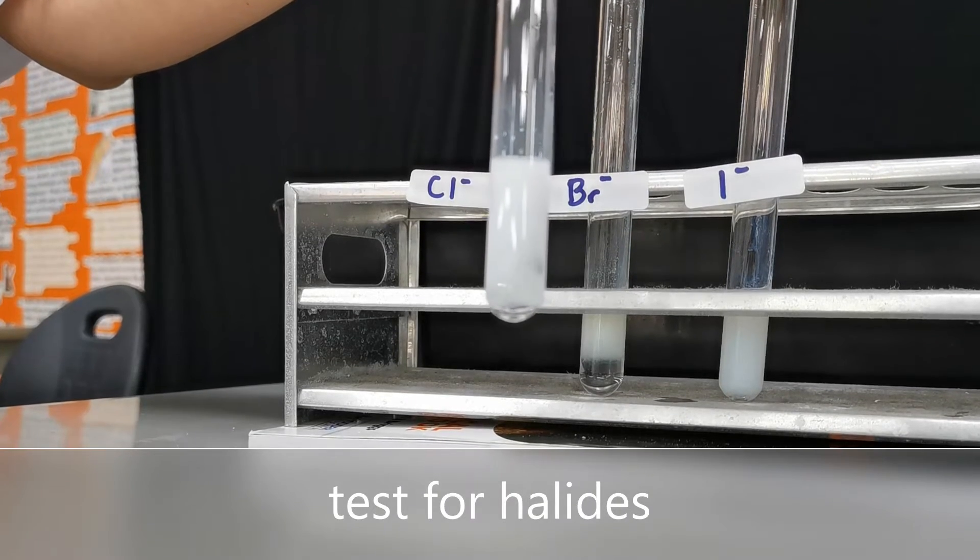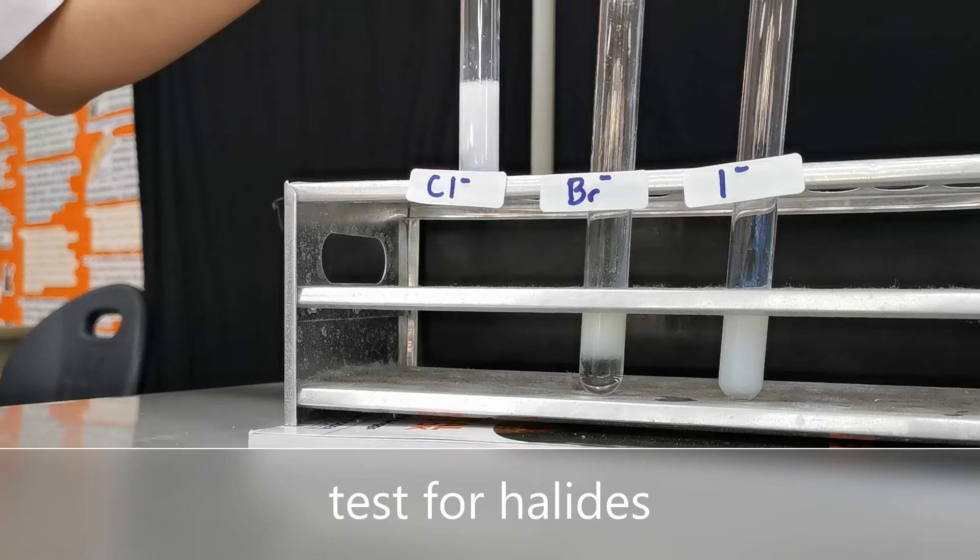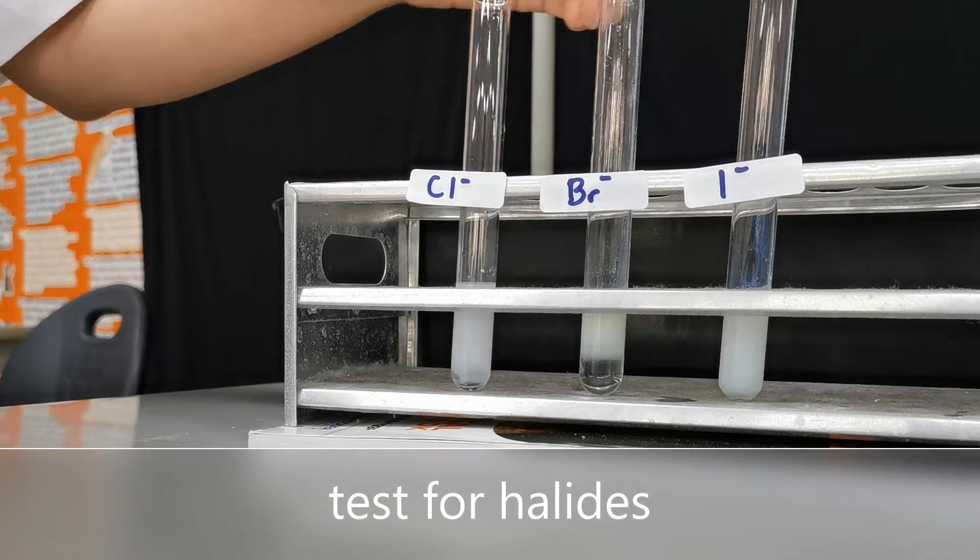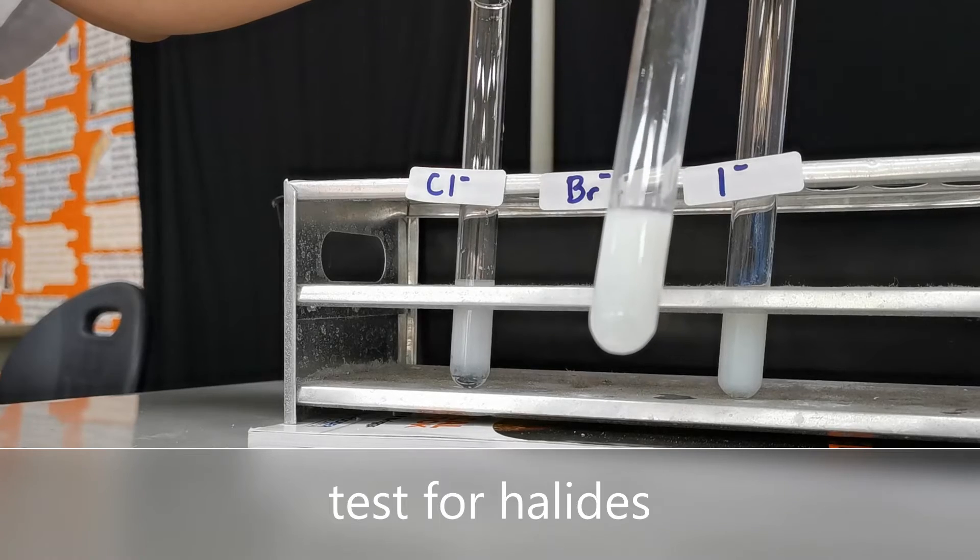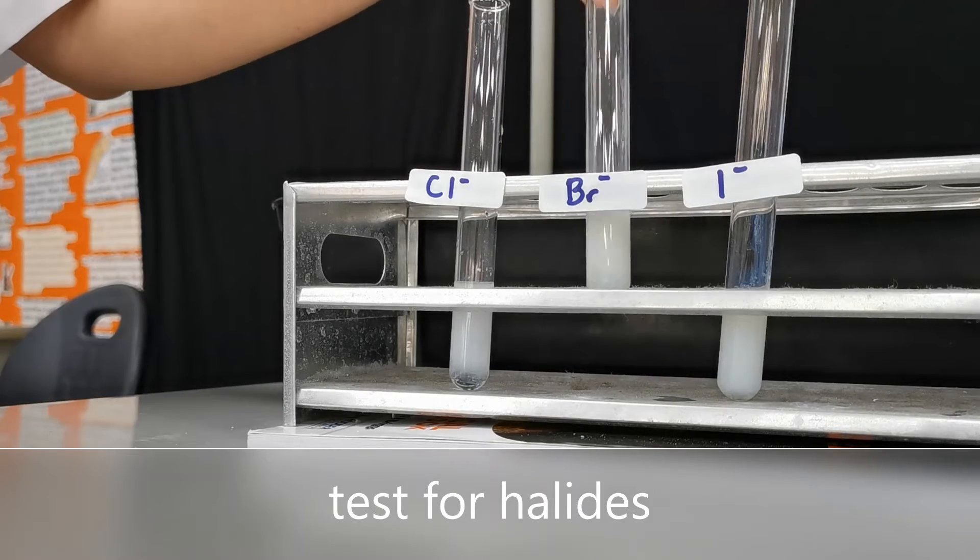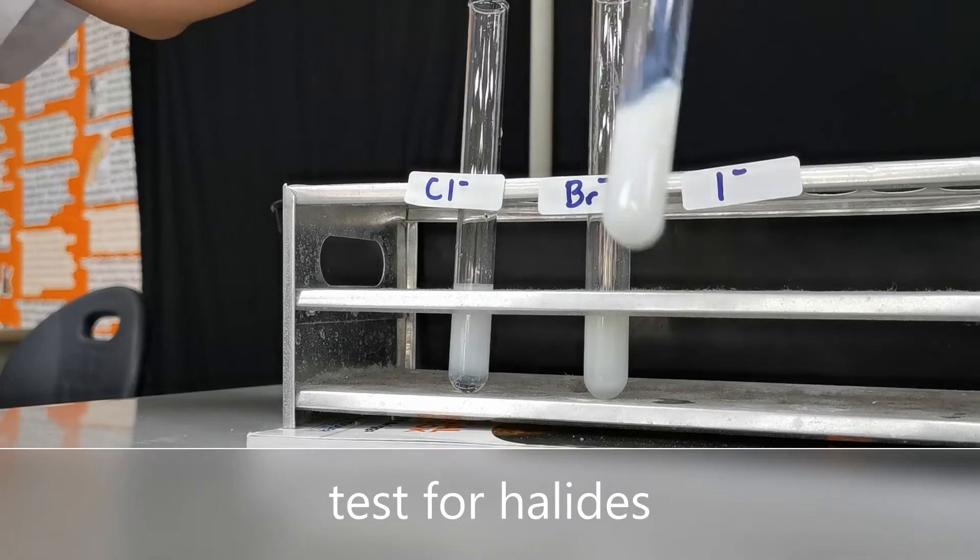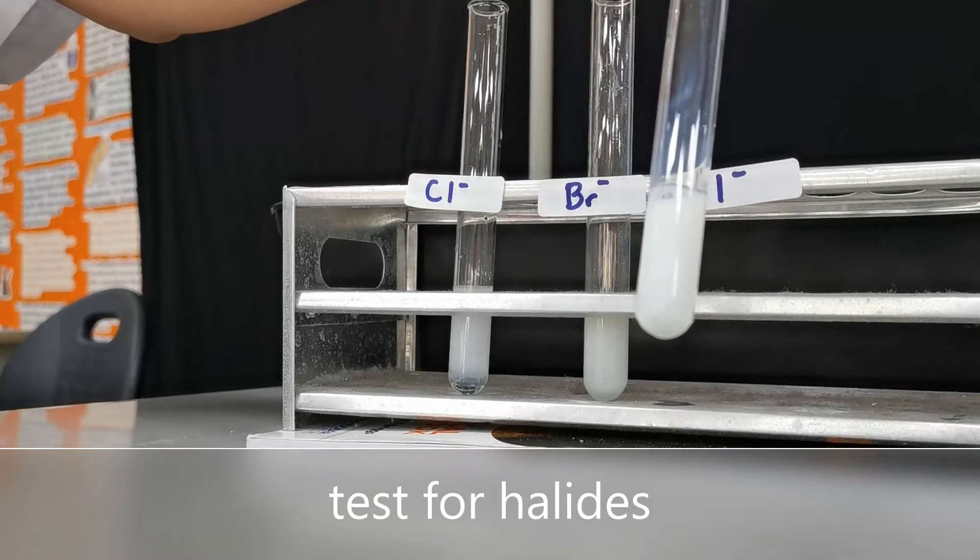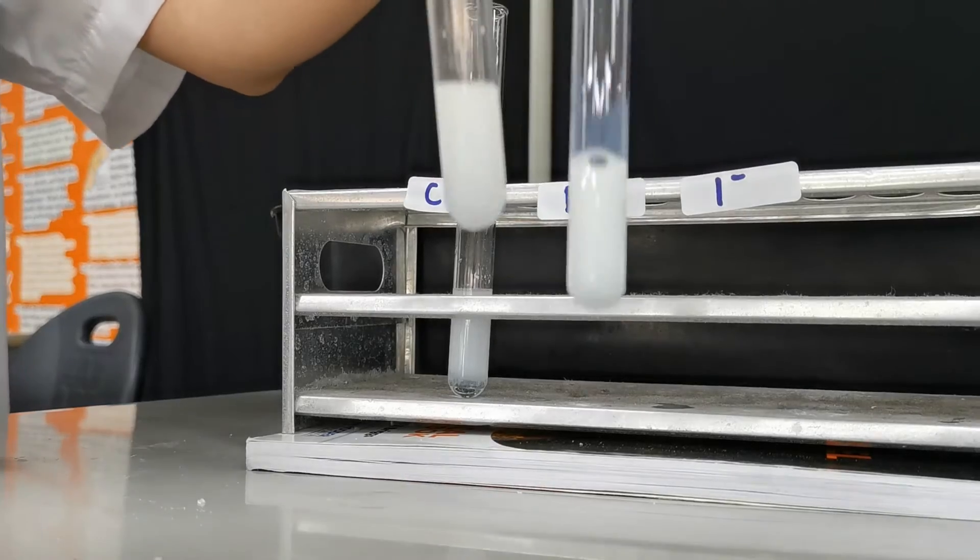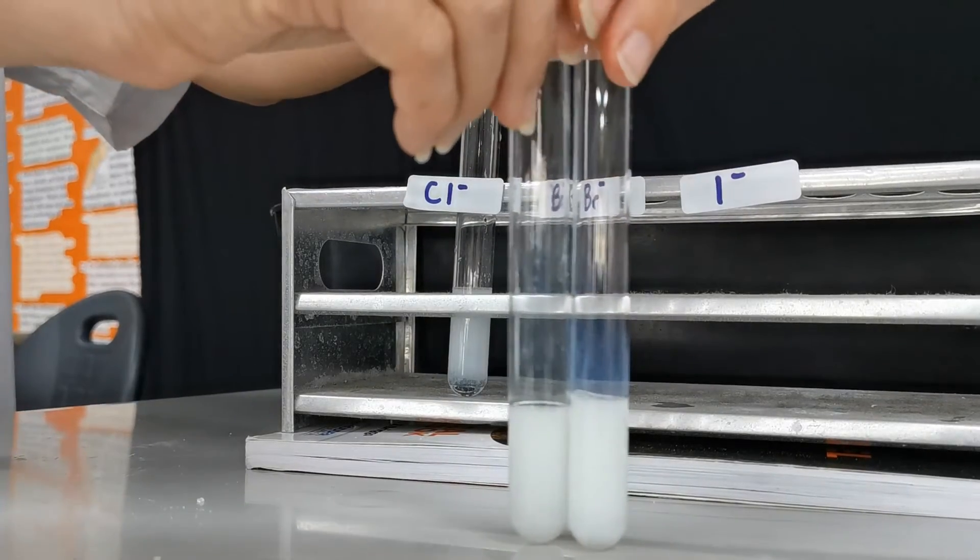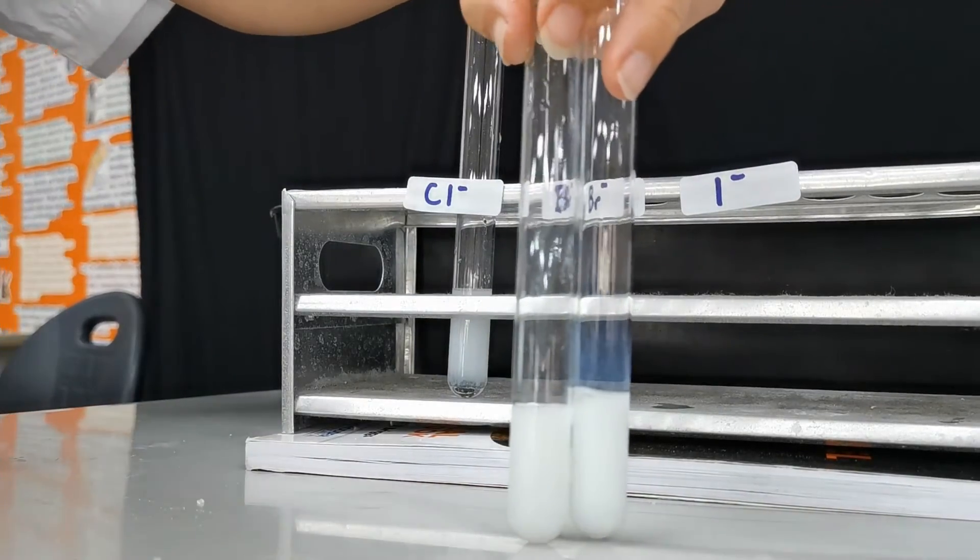White precipitate of silver chloride, cream precipitate of silver bromide, and yellow precipitate for silver iodide. You can see that there is actually a very slight difference between silver bromide and silver iodide.